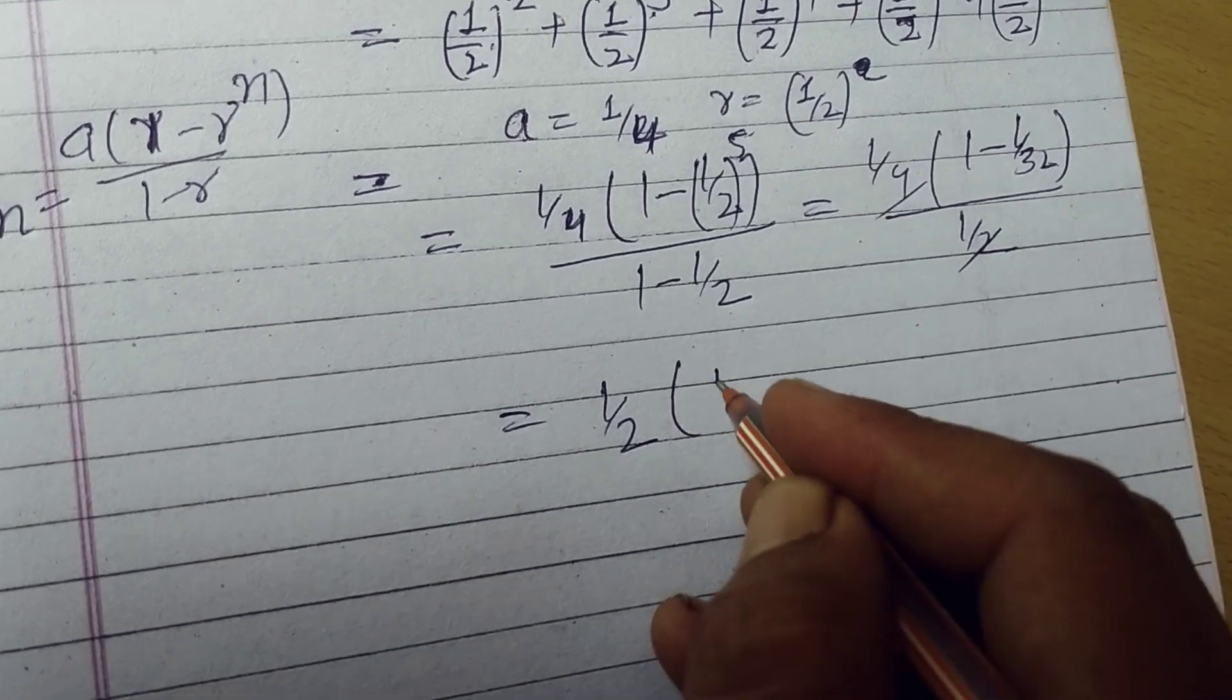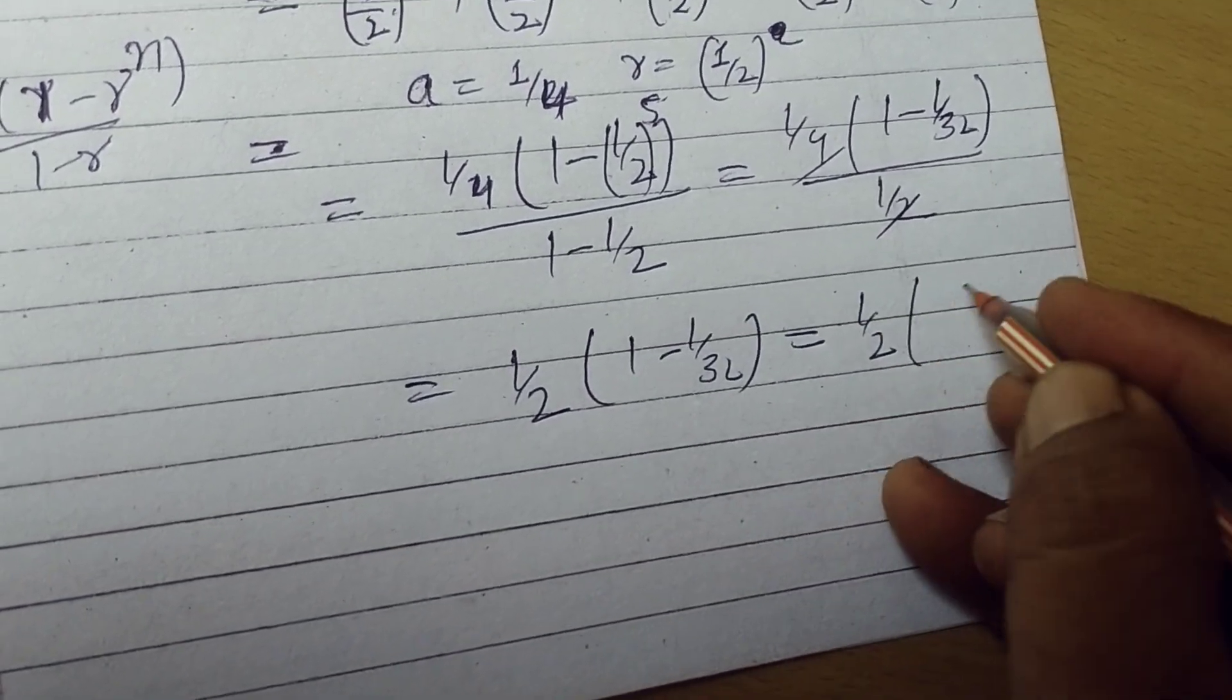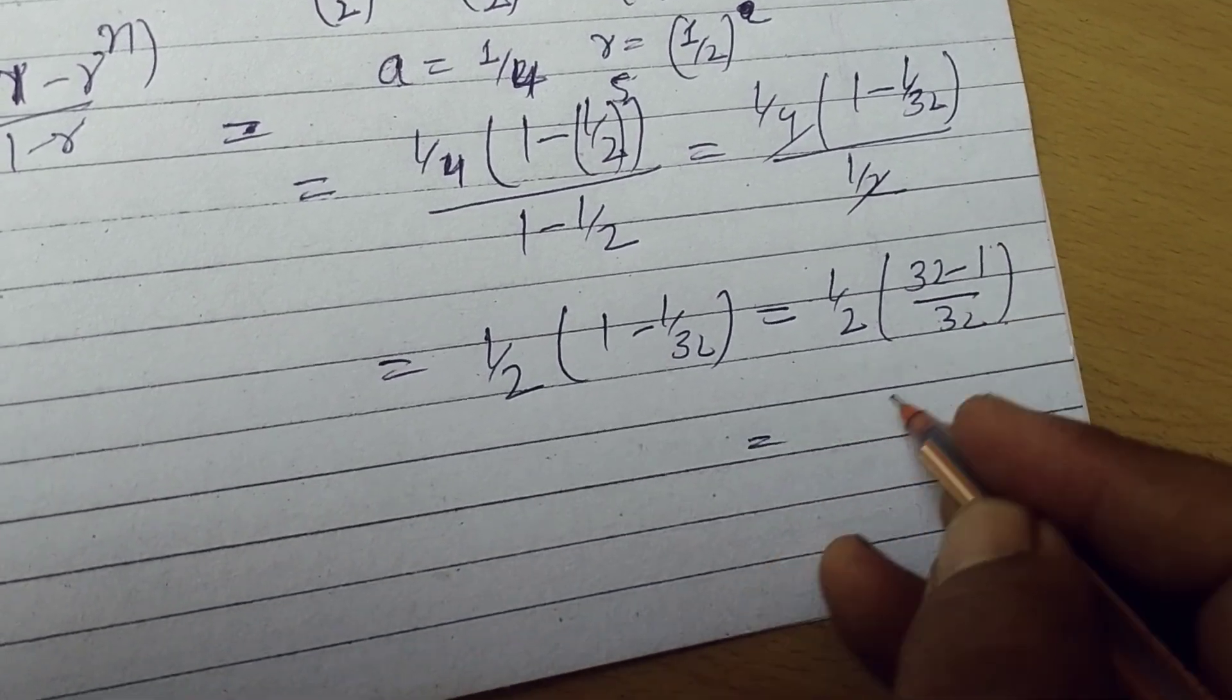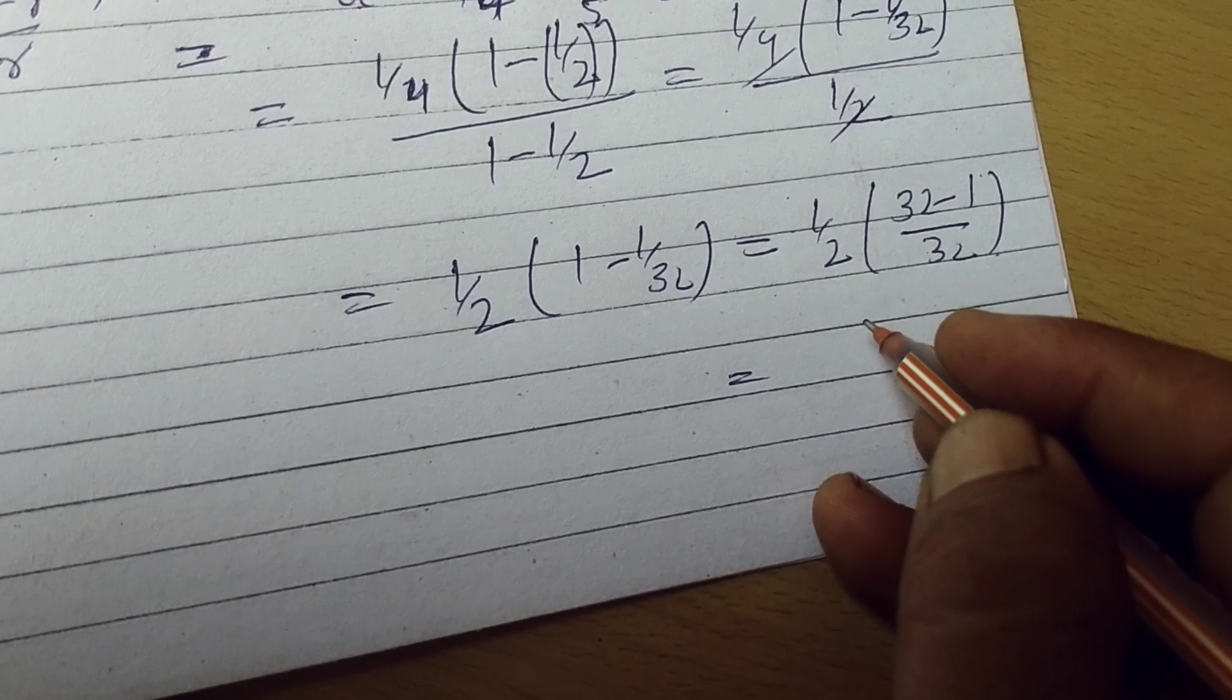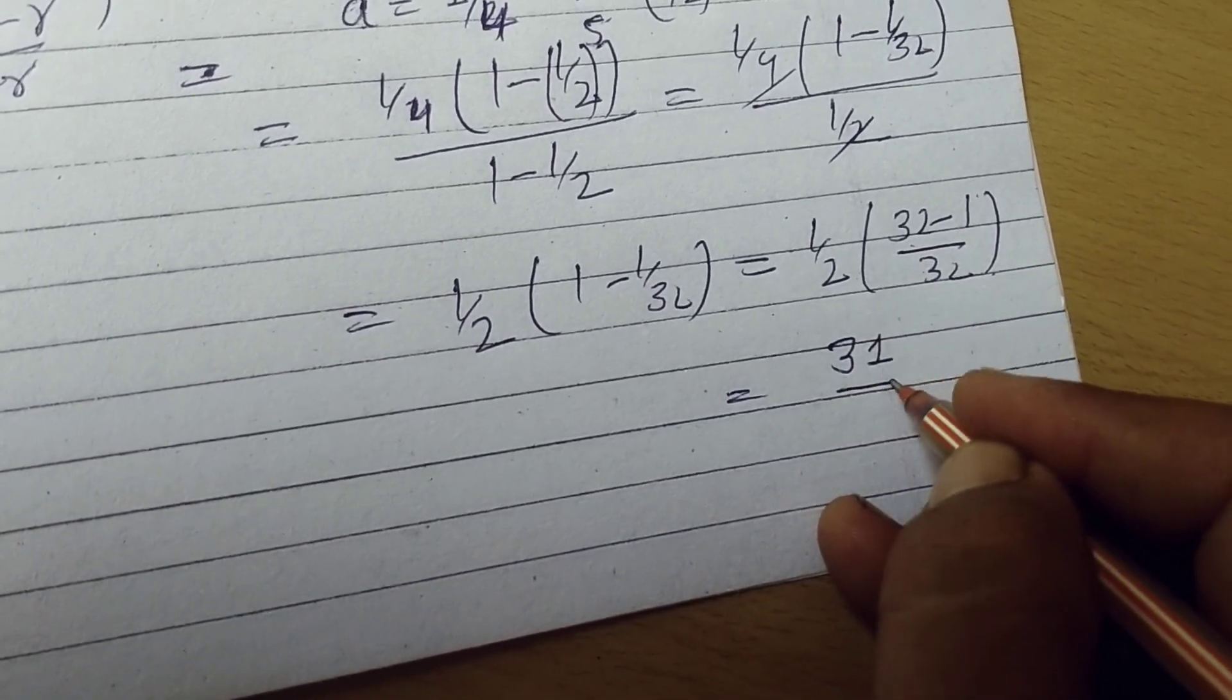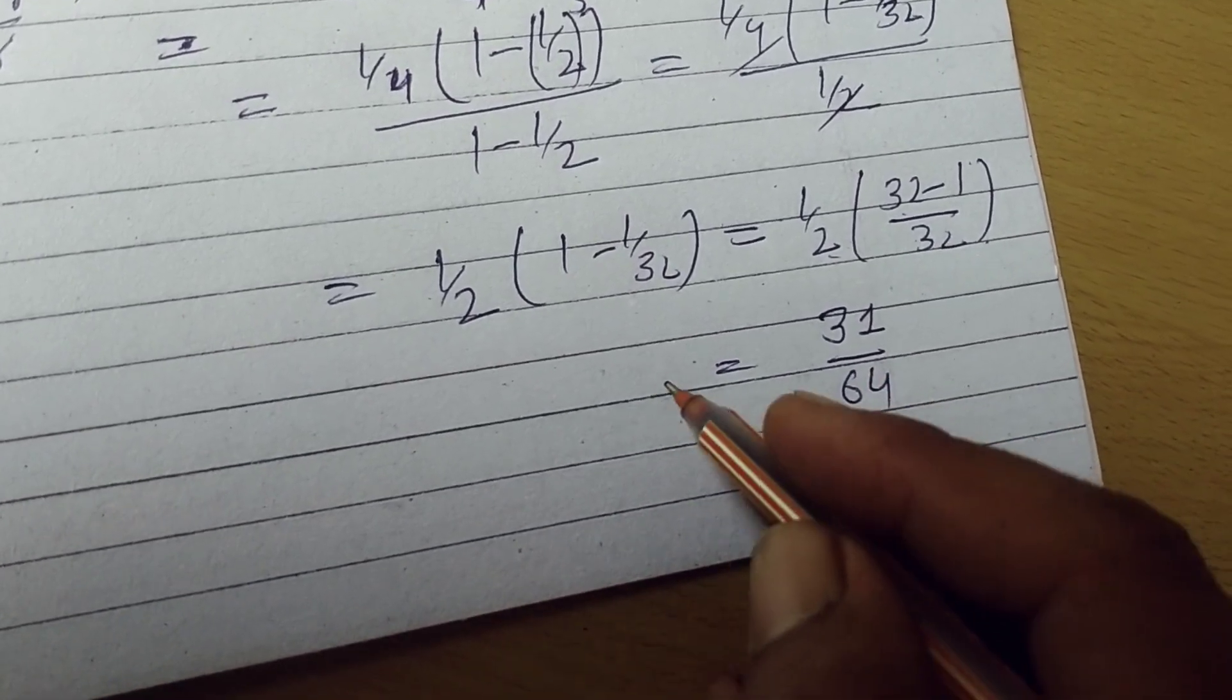Therefore 1 by 2, 32 minus 1 upon 32. So this is 31 upon 32 into 2, this is 64.